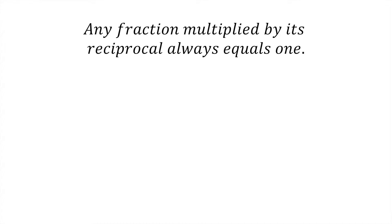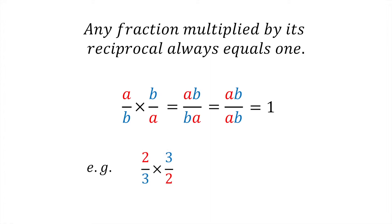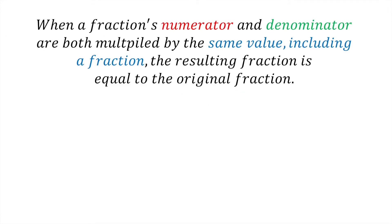That is, A divided by B multiplied by B divided by A always equals 1. For example, 2 divided by 3 multiplied by 3 divided by 2 equals 2 times 3 divided by 3 times 2, which equals 6 divided by 6, which equals 1.